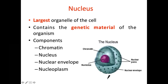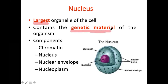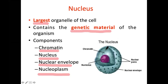The nucleus is the largest organelle of the cell. If this were a computer, the nucleus would be the CPU. Its most important function is containing the genetic material of the organism. Components of the nucleus include chromatin, the nucleolus, the nuclear envelope, and the nucleoplasm.